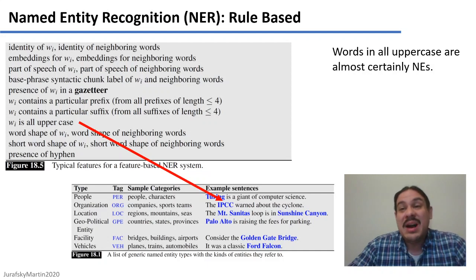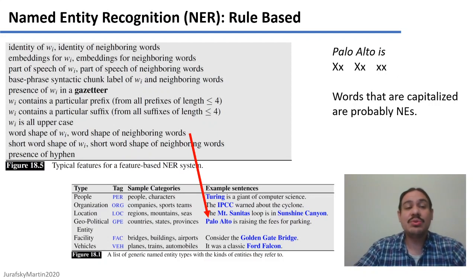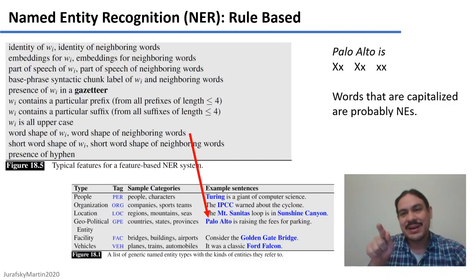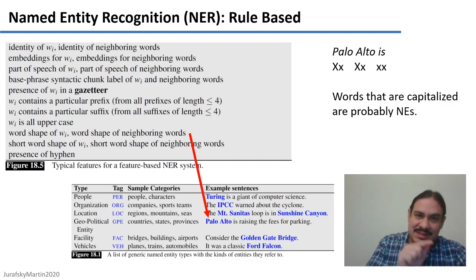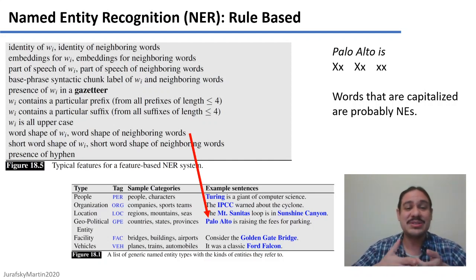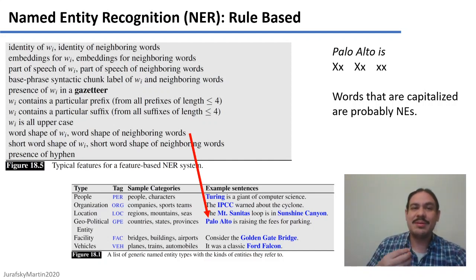There are features you can use like being all uppercase, like the acronym IPCC — it's very unlikely that a verb is going to be written like that in English. You can use something called the word shape, which is described with a series of X's. The first X means uppercase and the second means everything else is lowercase. So the shape of 'Palo' is: starts with uppercase, continues with lowercase. 'Alto' similarly starts with uppercase, continues with lowercase. This kind of shape is almost certainly going to be a proper name in English. If you study German, you know that this rule will fail, because in German all nouns need to be capitalized. So these rules are language-specific, and this set can help us extract named entities in English.